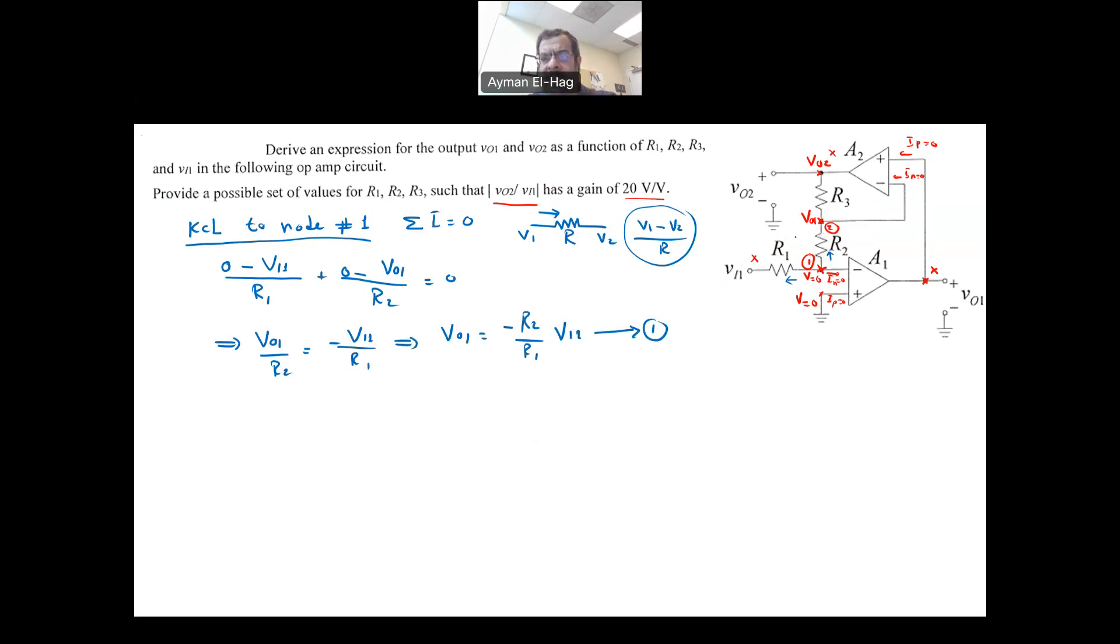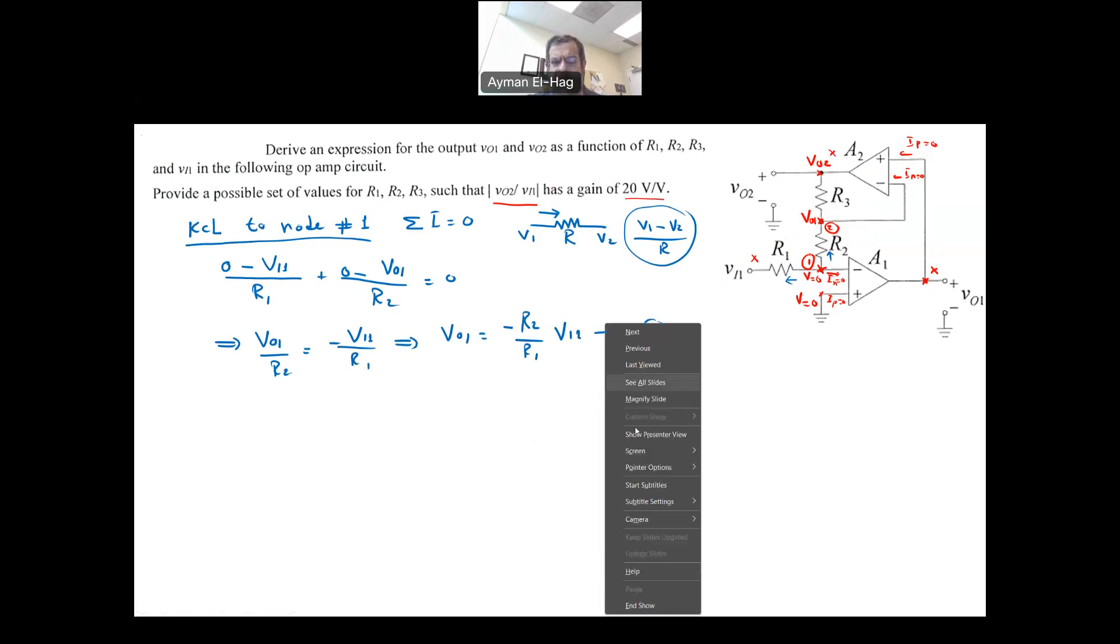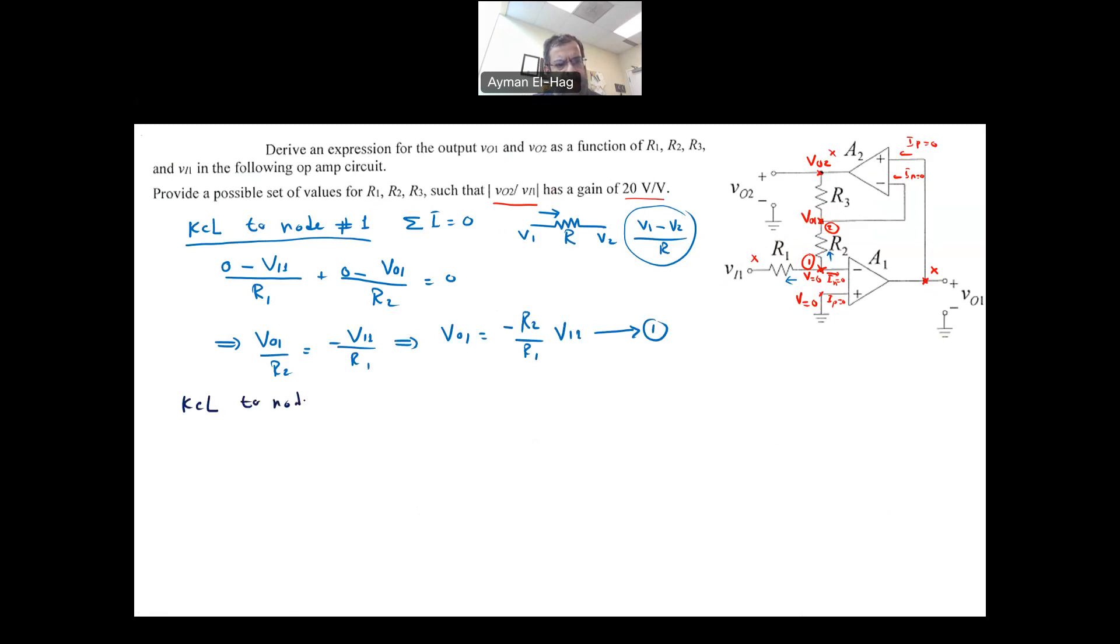Then I will apply KCL to the second node. Usually in those type of questions, you will have maximum of two KCL, no more, no less. So apply KCL to node number two. Now when we come to the node, we assume the current direction the way we like. The step before that does not influence our decision of the current direction. So I can assume the current also leaving here. So it's independent of the previous step. And the current here as we know it is equal to 0. So we have also two currents. So we have V01 minus 0 divided by R2, which is this current that goes down.